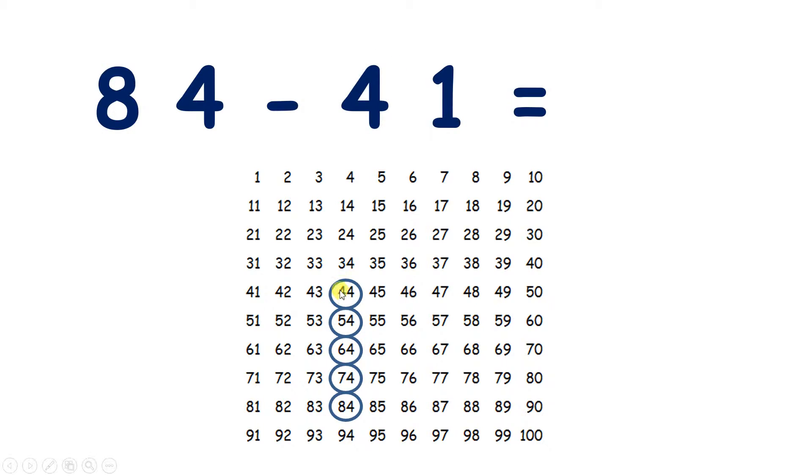So now we've subtracted our four tens, we need to subtract one unit. And we subtract units by moving to the left. So if we're subtracting one unit, we can move one place to the left. So 84 minus 41 equals 43.